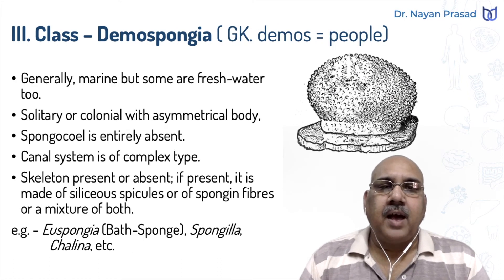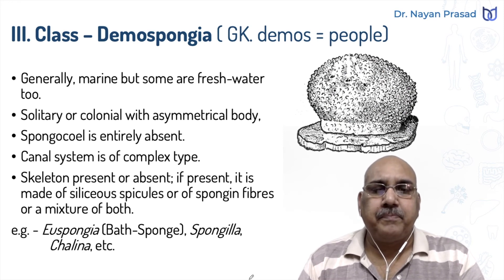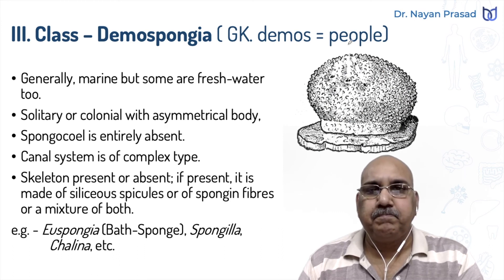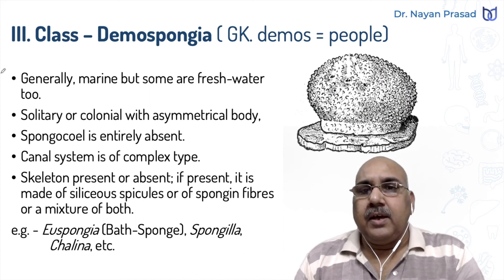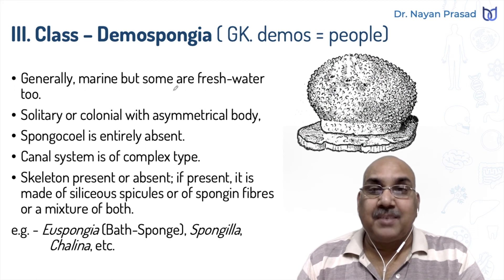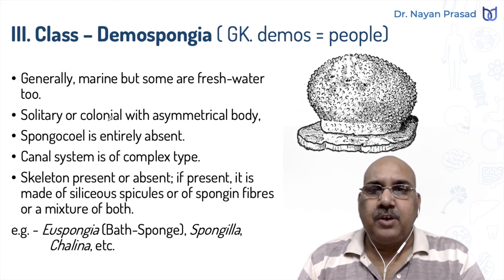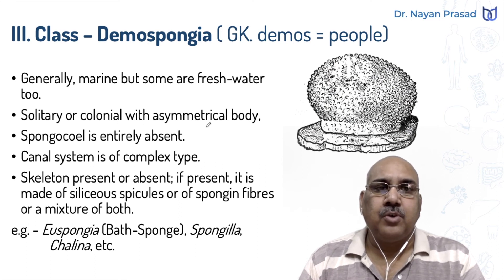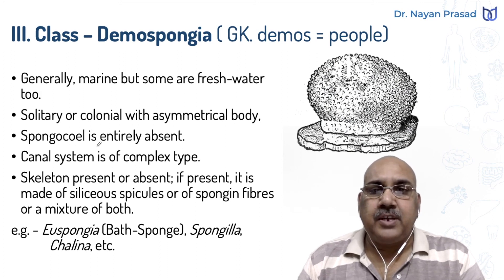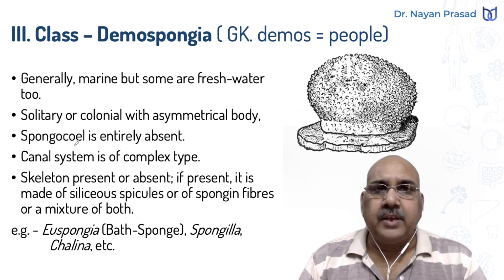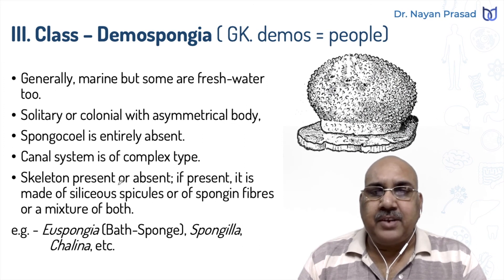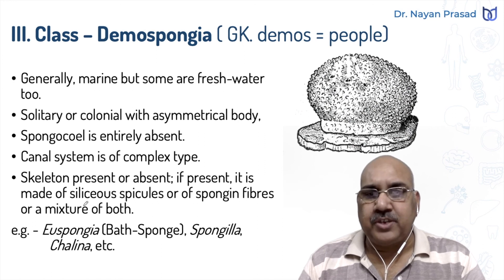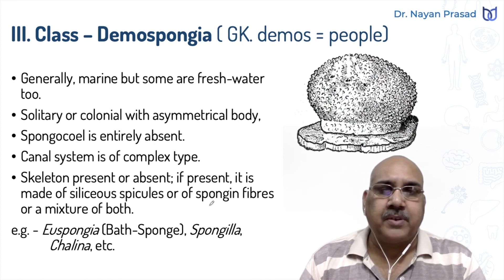Next one — Class Demospongia. The name is taken from Greek language, in which demos means people. In fact, these members are common among people; the example is the bath sponge. These are generally marine, but some are freshwater — for example, Spongilla is a freshwater member. They may be solitary or colonial, with an asymmetrical body, meaning no two sides are similar. Spongocoel is entirely absent in these cases. Canal system is of complex type, branched. The skeleton may be present or absent; if present, it is made up of siliceous spicules, or of spongin fibers, or a mixture of both.